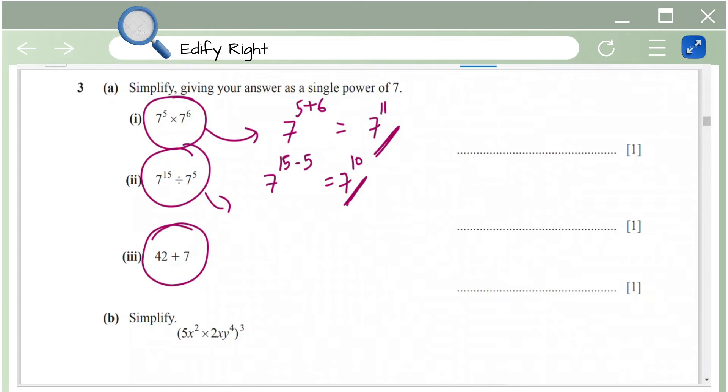Next we have 42 plus 7. 42 plus 7 is 49 which is basically 7 power 2. That's it.